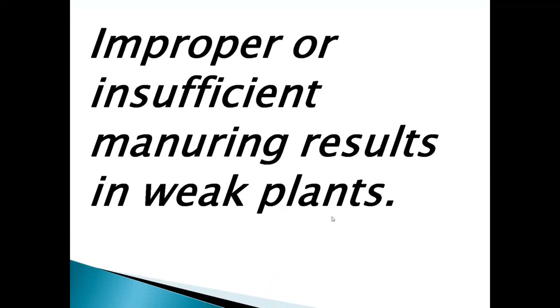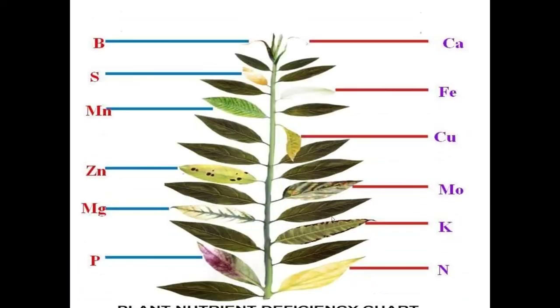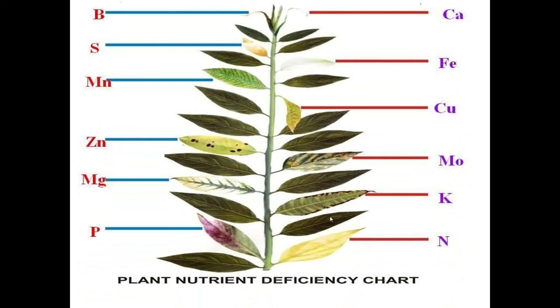Improper or insufficient manuring results in weak plants. Plants require important minerals like boron, sulfur, manganese, zinc, magnesium, phosphorus, calcium, iron, copper, molybdenum, potassium and nitrogen.